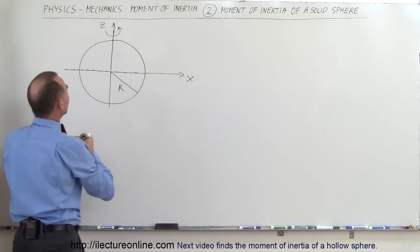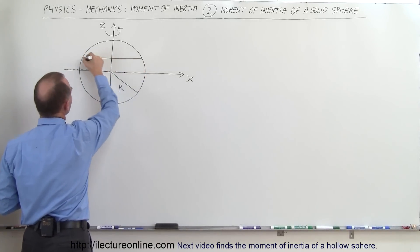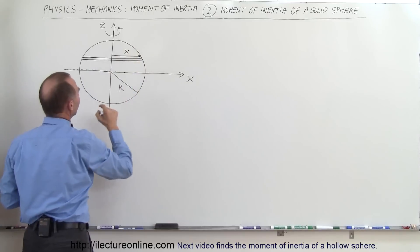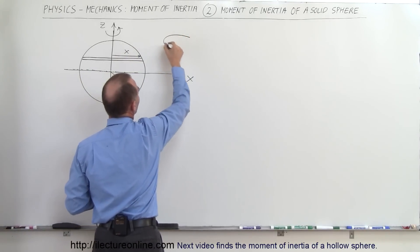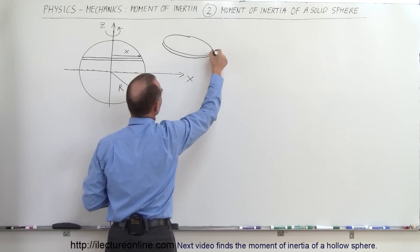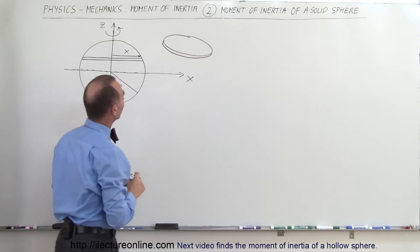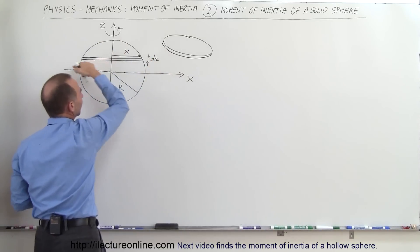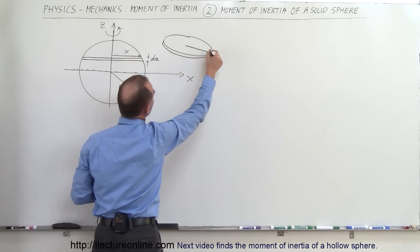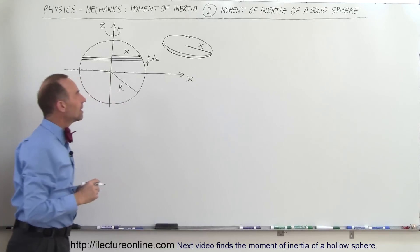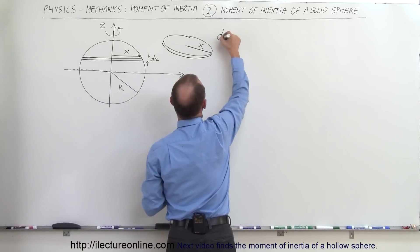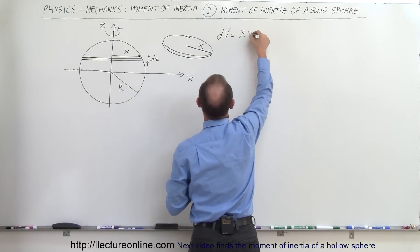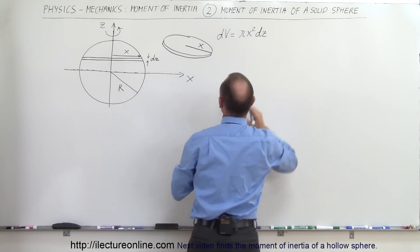The best approach is to slice the sphere up. We take a slice with radius equal to x and thickness DZ, since this is the z-axis. The x-axis gives the radius of that slice, so the volume DV of that infinitesimal slice equals the surface area pi x² times DZ.